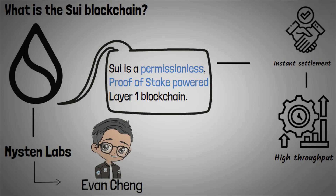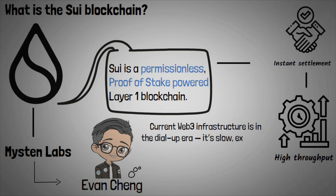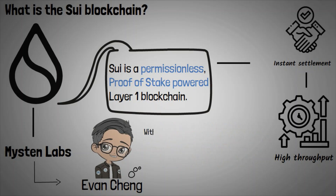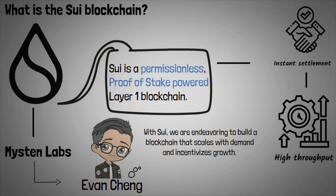According to Evan Cheng, co-founder and CEO at Misson, current Web3 infrastructure is in the dial-up era — it's slow, expensive, capacity-constrained, insecure, and simply hard to build for. With Sway, we are endeavoring to build a blockchain that scales with demand and incentivizes growth, eliminating middlemen and enabling users across applications to seamlessly integrate and interact with their favorite products.